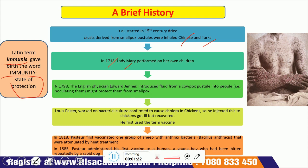In 1798, English physician Edward Jenner thought of introducing fluid from the cowpox pustule into people — that is inoculating them — might protect them from smallpox. He inoculated an eight-year-old boy with fluid from a cowpox pustule and later intentionally infected the child with smallpox. That child also recovered from the disease.